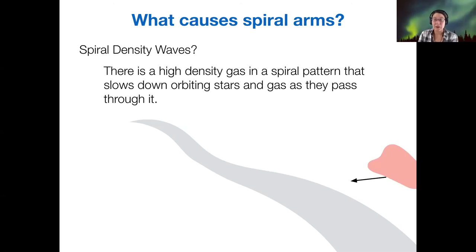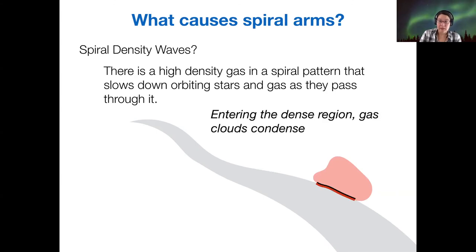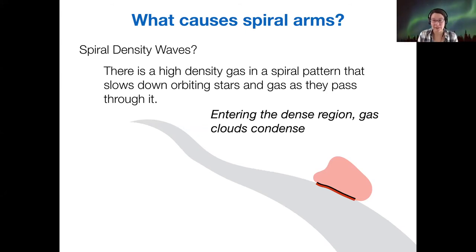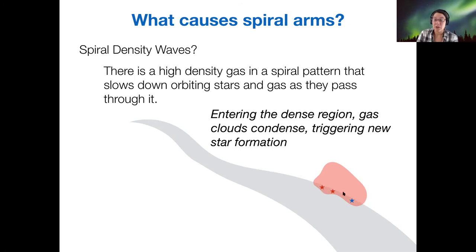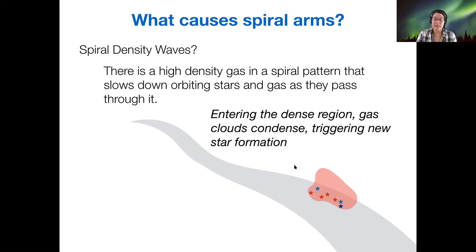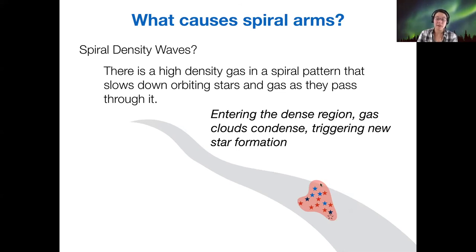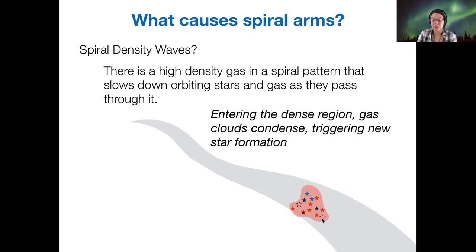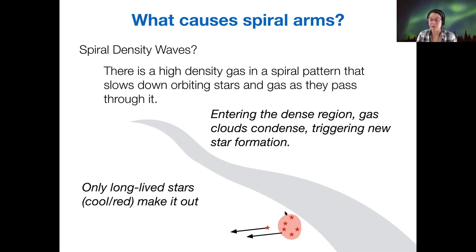If instead we have a gas cloud coming into the high-density region, the interaction causes that gas cloud to condense — like two clouds crashing together, causing some gas to reach higher density. Those higher-density regions then collapse into stars. More and more stars get made as more of the gas cloud collapses. Some of these stars will start to die quickly — blue stars are short-lived, so they die out first. As they go supernova, we have mostly red stars that make it out of the other side of the traffic jam intact.